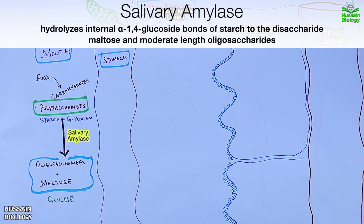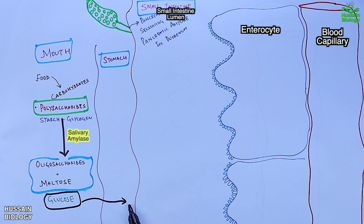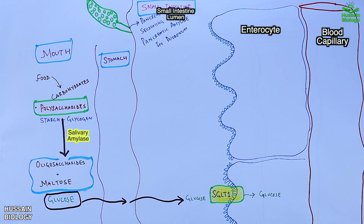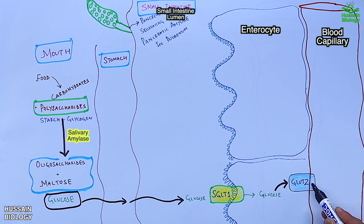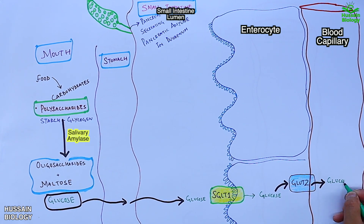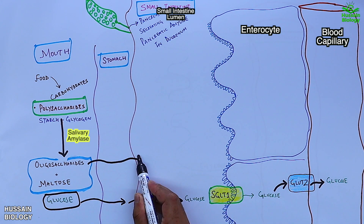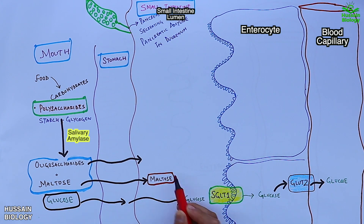Free glucose in the food doesn't need any digestion and directly reaches the small intestine, where it is transported into enterocytes via the SGLT1 transporter as shown in the diagram, and then enters circulation via the GLUT2 transporter protein. The oligosaccharides and maltose also reach the small intestine for further digestion.